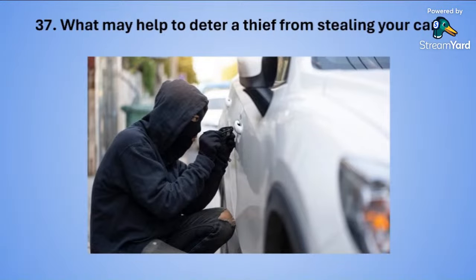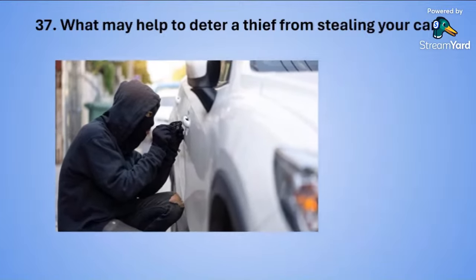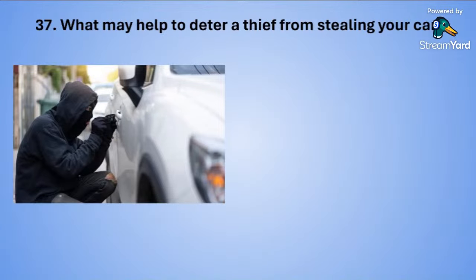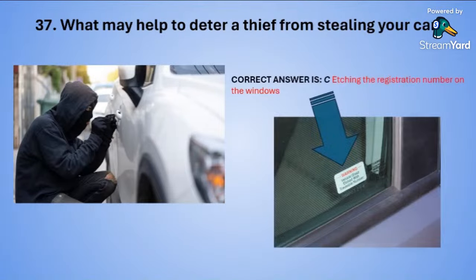Question thirty-seven: What may help to deter a thief from stealing your car? A: always keeping the headlights on. B: always keeping the interior light on. C: etching the registration number on the windows. Or D: fitting reflective glass windows. The correct answer is C — etching the registration number on the windows.